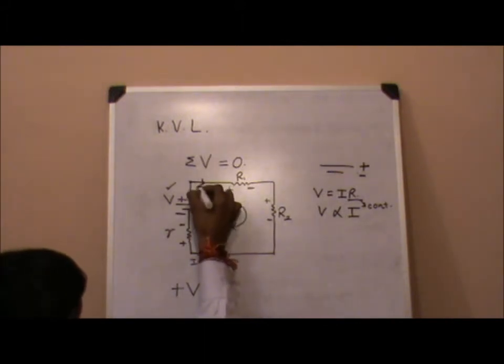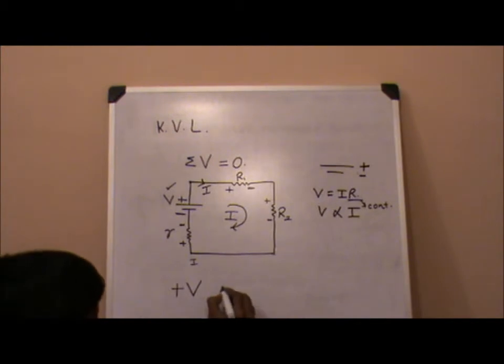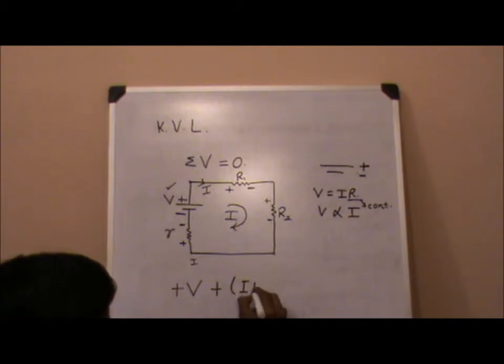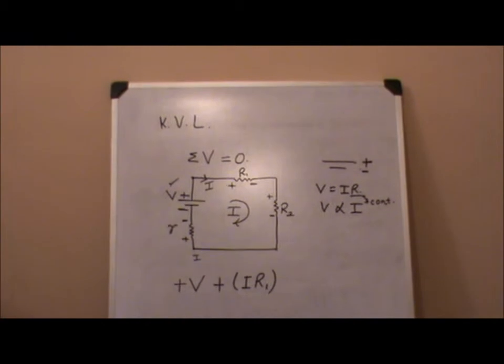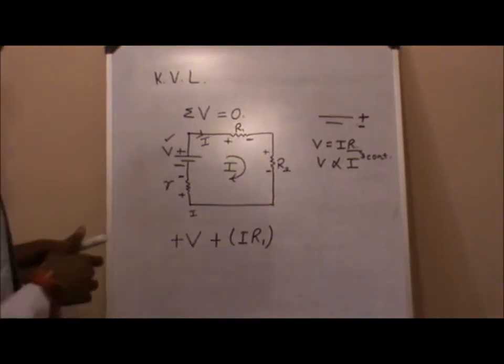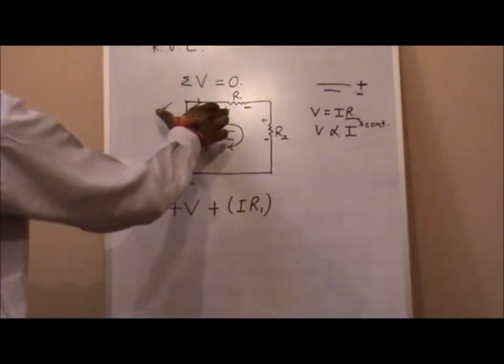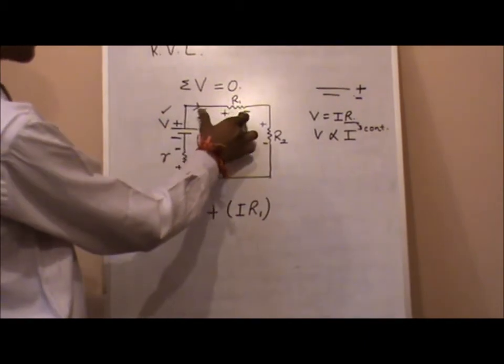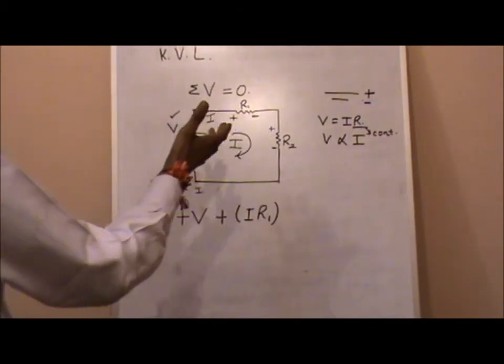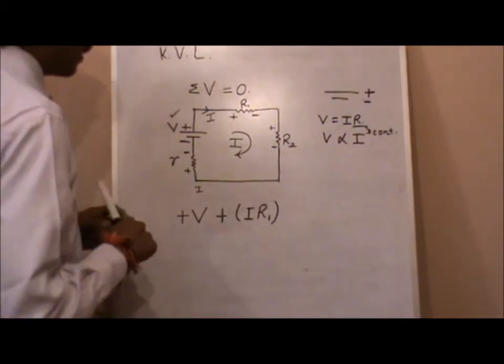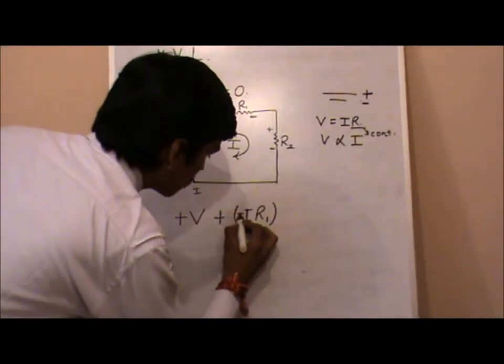Now current is moving towards R1, that will give you plus I into R1. One thing that should be noted over here is that this I entering with the positive sign and exiting with or exits with negative sign. That means the total value should be negative.